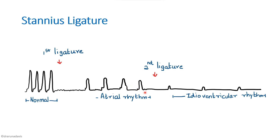This is because of blockage of impulses from sinus venosis to atria. When the second ligature is applied, conduction of impulses from atria to ventricles is also blocked, so the heart stops for some time and then the ventricles start contracting at a very slow rate. This is called the idioventricular rhythm, about 10 beats per minute. This recording has only the ventricular component, whereas the earlier recording had both atrial and ventricular components.